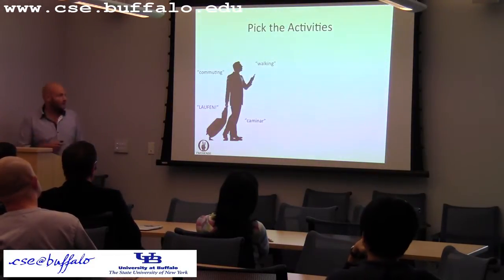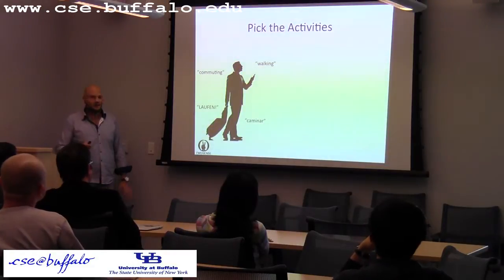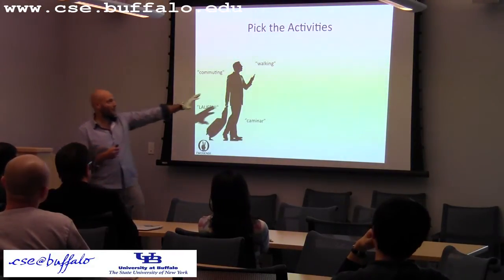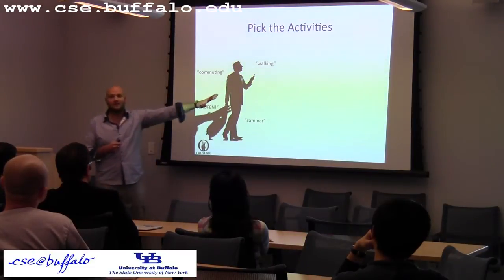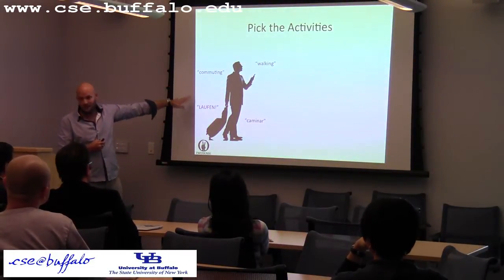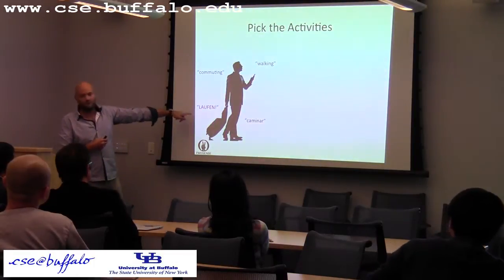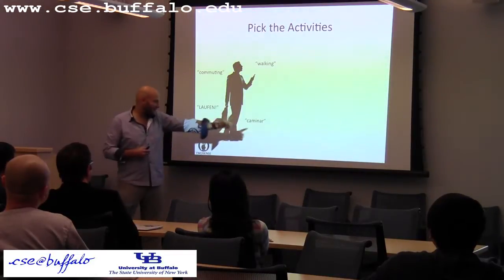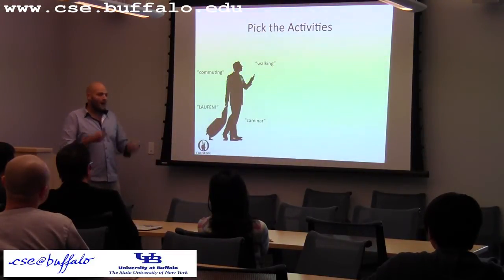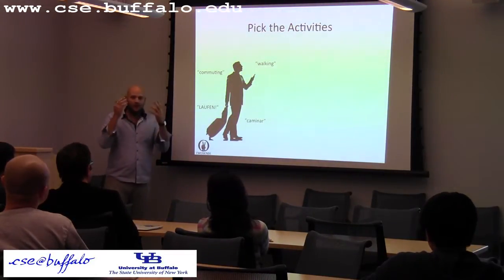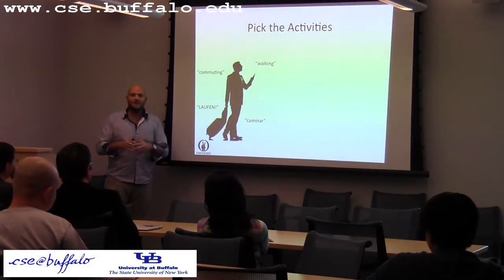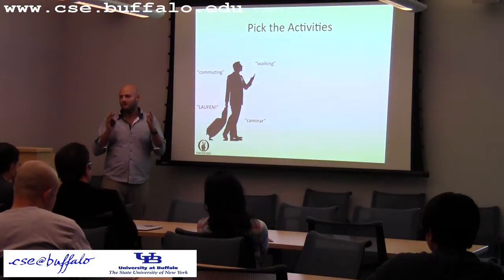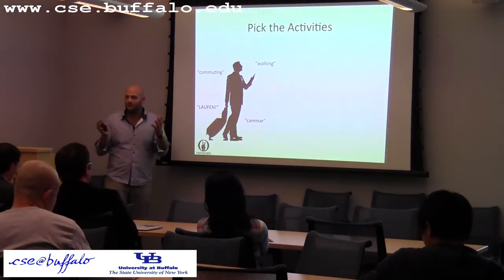The first thing you have to do is figure out the activities you want to recognize. If you look at this — a guy walking along using his phone — you could call that 'walking,' but somebody else might say 'commuting,' and in German it's 'Laufen.' Walking has a thousand different names. So the namespace for one specific kind of activity is infinite — everybody refers to it as something different. That's the first problem.